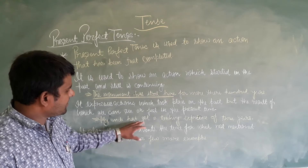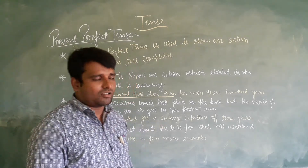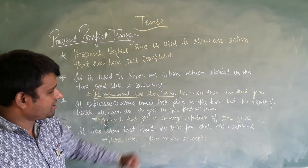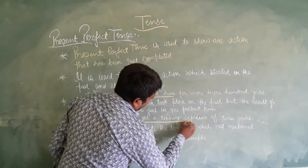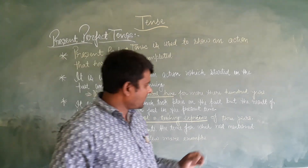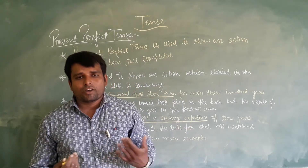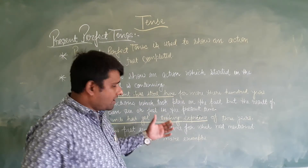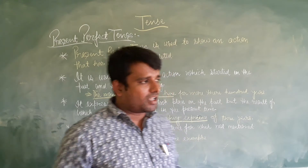For example: My uncle has got a teaching experience of three years. मेरे चाचा के पास तीन साल का पढ़ाने का अनुभव है। तीन साल तक पढ़ाने का कार्य पहले हुआ होगा, लेकिन उसका result हम आज वर्तमान time में महसूस कर रहे हैं।